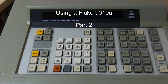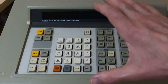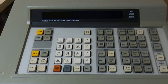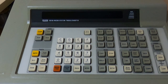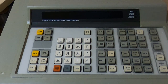This is the second in a series of videos demonstrating how the Fluke 9010A microsystem troubleshooter can be used in fault finding. There are almost an infinite number of ways this machine can be used, so this will not be an all-encompassing series. I'm going through some basic methods and types of testing, but if there's anything in particular you want me to look at, please leave a comment.